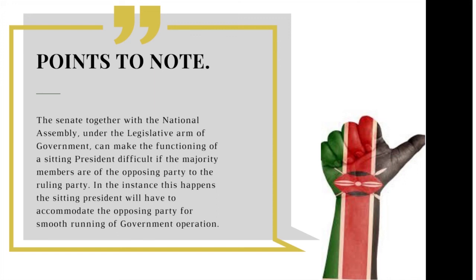Because if Mwai Kibaki had not included Raila Odinga, he would not have been able to run the government smoothly. It is therefore very important for a sitting president to have a majority number of senators in the Senate and members in the National Assembly. In the 2022 elections, there were four presidential candidates, but only three had significant numbers of Senate and National Assembly candidates running. Candidates like George Wajackoyah and Mwaure did not have a single member running for a parliamentary position, so if either had been elected president, their nominations and legislative agenda would have been shut down by the opposing party.